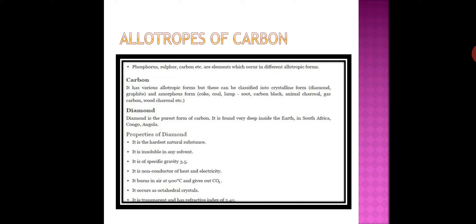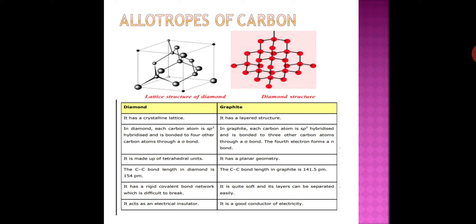Diamond is found in India mainly in Golconda and Panna, Madhya Pradesh. Diamonds are also found in South Africa, Brazil, Belgium, and Russia. In diamond, every carbon atom is bonded to four neighboring atoms by covalent bonds, giving it a tetrahedral three-dimensional structure, which makes it very hard. Pure diamond is the hardest natural substance, with a density of 3.5 g/cm³ and melting point of 3500°C. Diamond does not dissolve in any solvent, acids and bases have no effect on it, and it is a bad conductor of electricity.